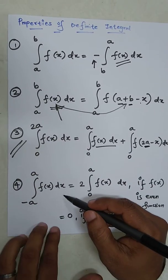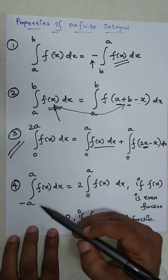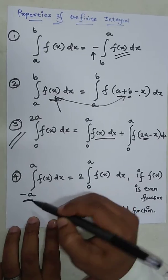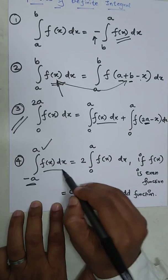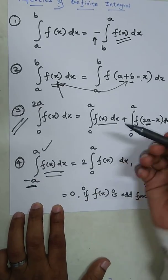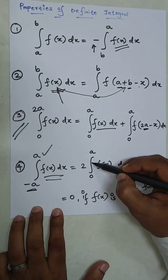And the fourth and very important property is nothing but minus a is the lower limit and plus a is the upper limit, f of x dx. Then we can write this thing as 2 outside of integrals, 0 to a, f of x dx.